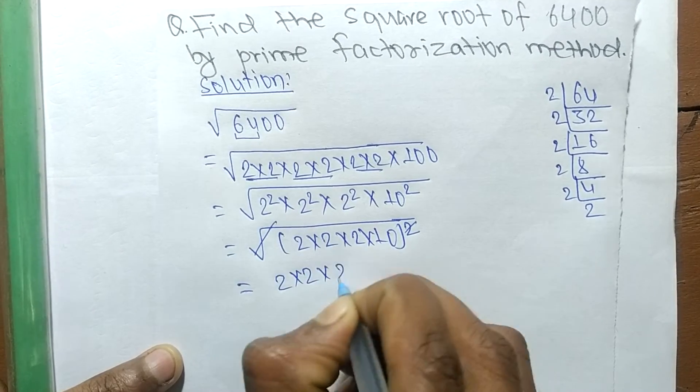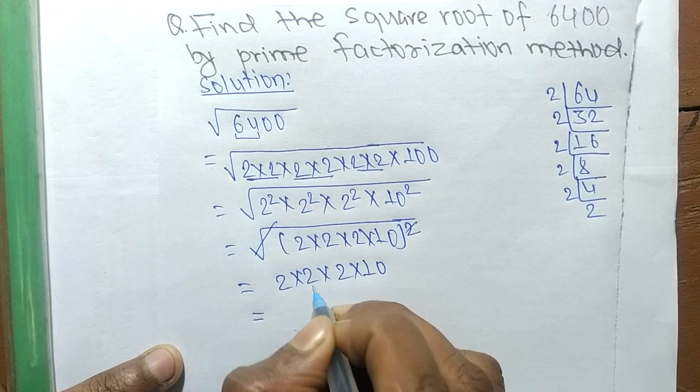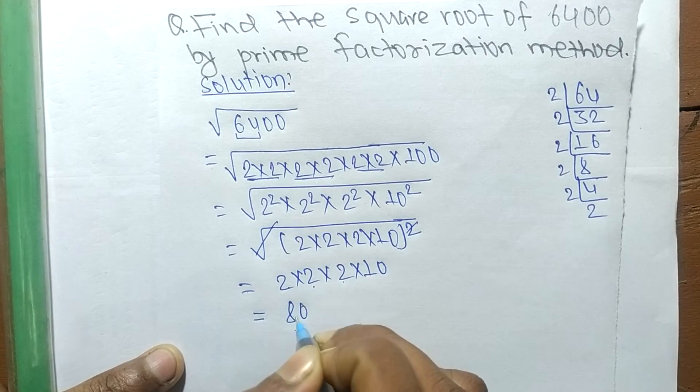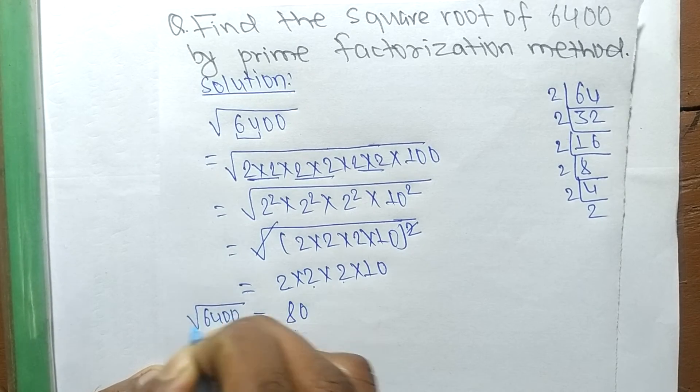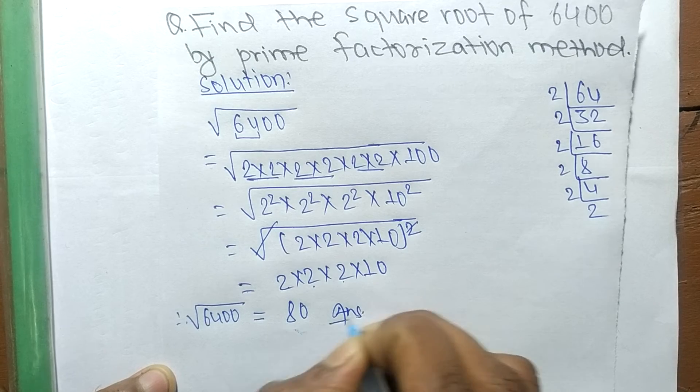So it is equal to 2 times 2 means 4, 4 times 2 means 8, and 8 times 10 means 80. So the square root of 6400 is equal to 80.